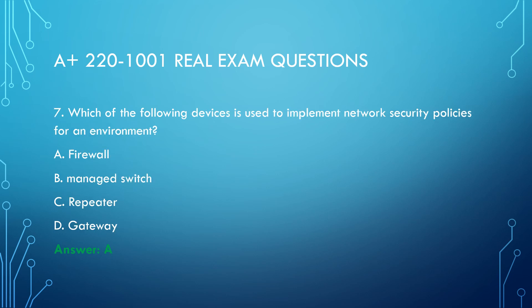Question 7. A team needs to deploy a temporary server room at a site to provide support during construction. Which of the following should they use while setting up the server room? A. Air filters. B. Privacy screens. C. Vacuums. D. ESD mats. Answer: A.